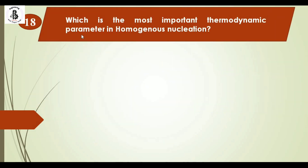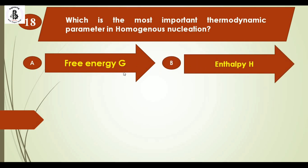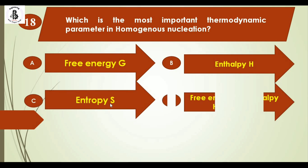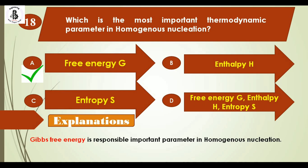Question 18: Which is the most important thermodynamic parameter in homogeneous nucleation? Option A: Gibbs free energy G, Option B: enthalpy H, Option C: entropy S, Option D: all of the above. Gibbs free energy is the most important parameter responsible for homogeneous nucleation. The right answer is option A: Gibbs free energy.